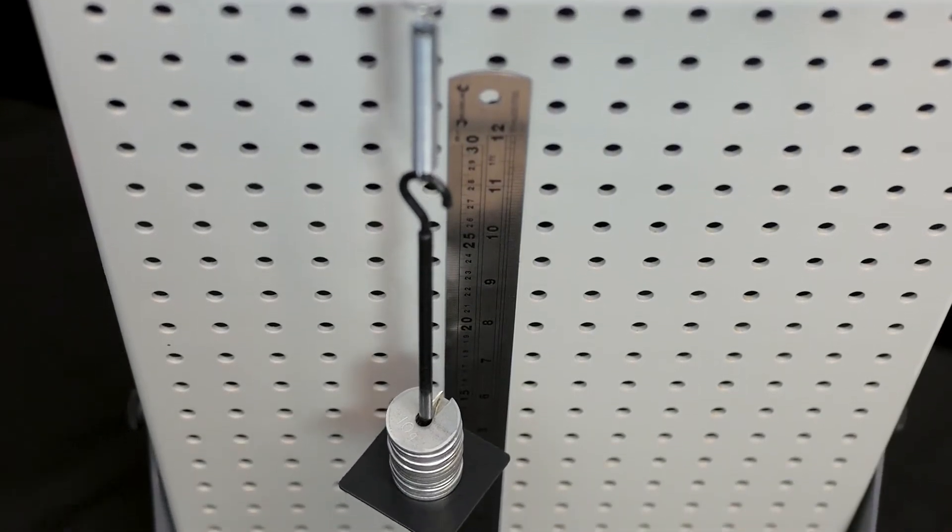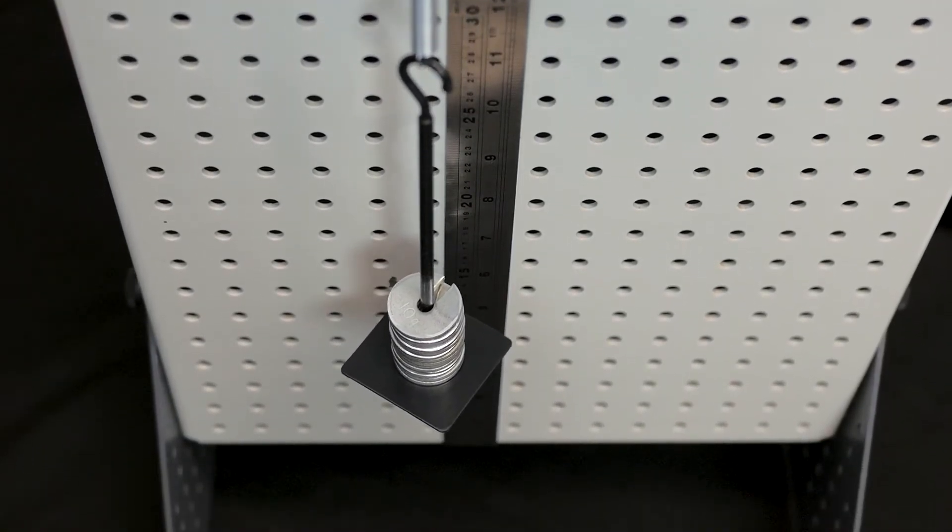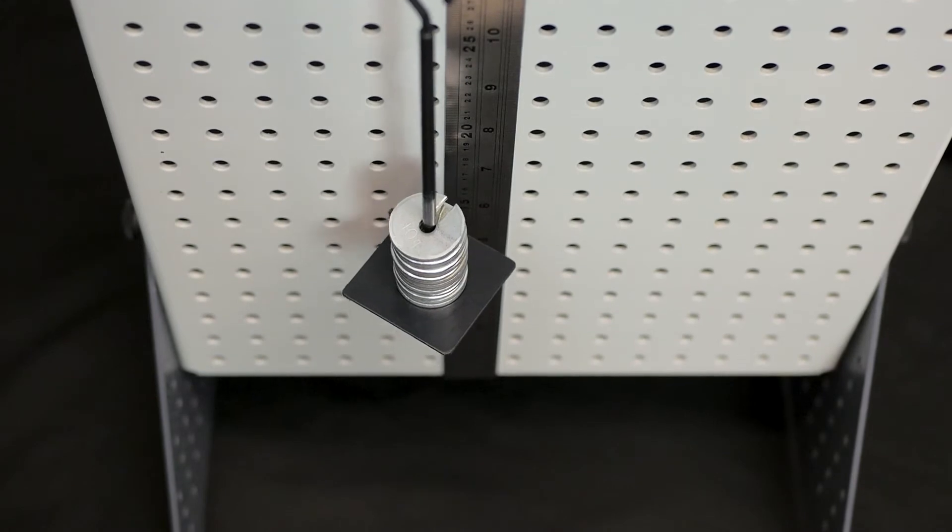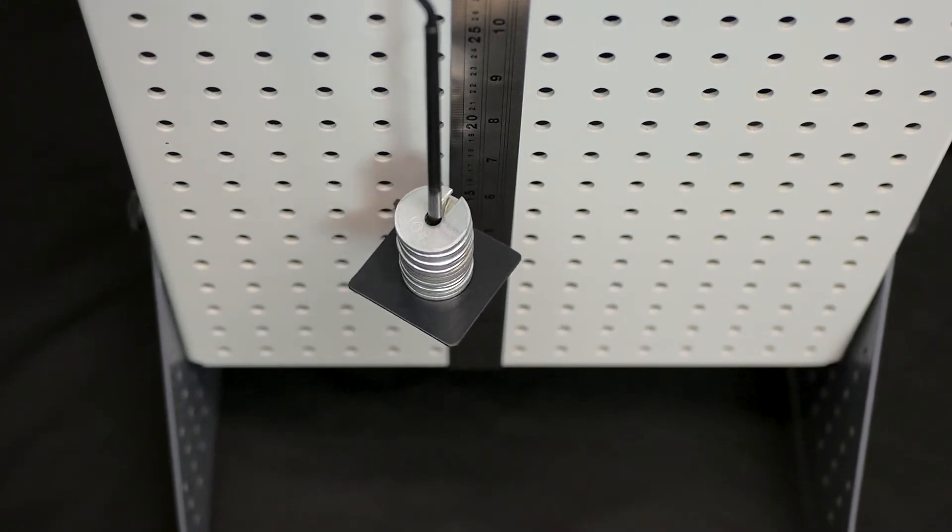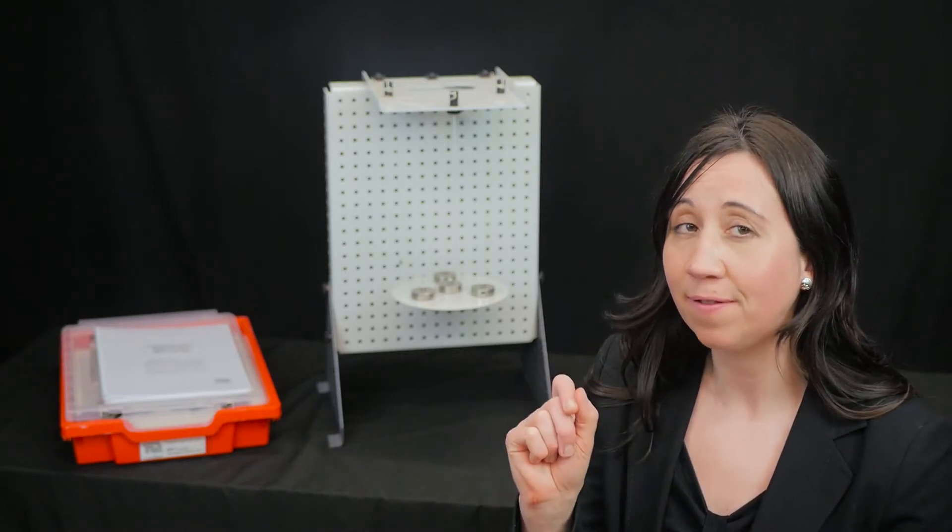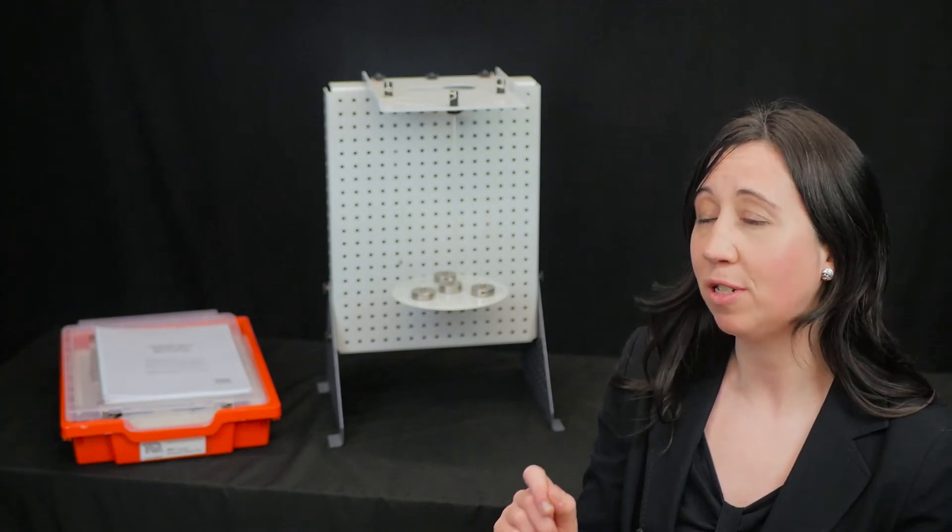Firstly, different weights are hung onto a spring and you measure the downward extension then chart the results. Then you measure the up and down oscillations using the stopwatch to record how long it takes to complete 50 oscillations. You can then calculate how the theory matches up to reality.